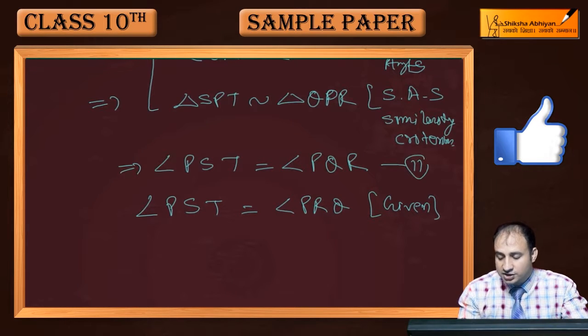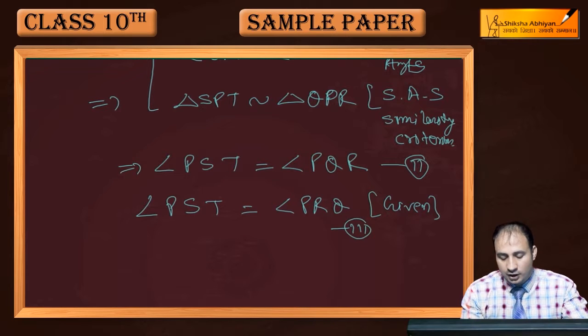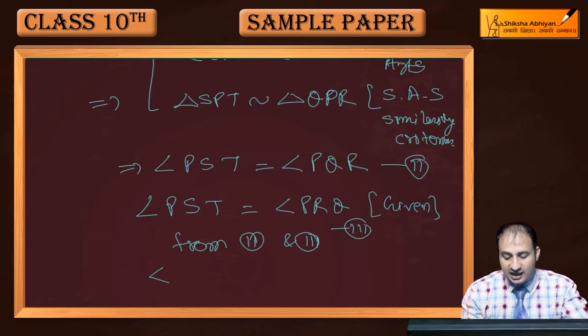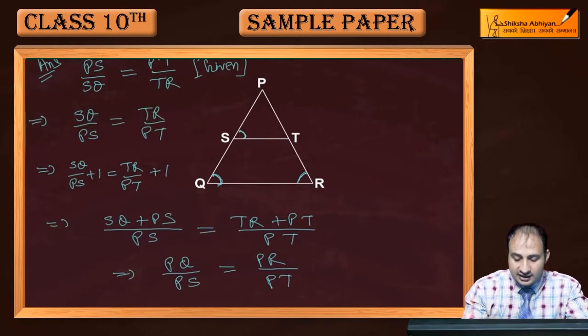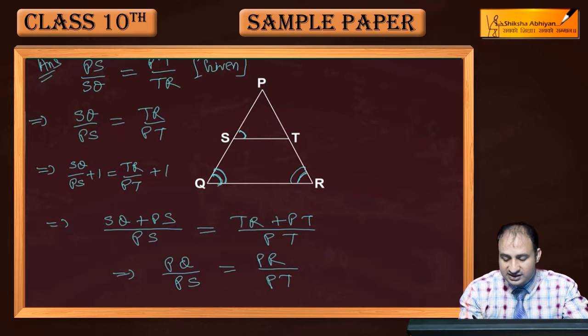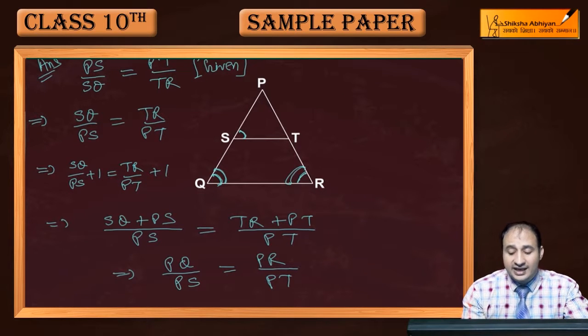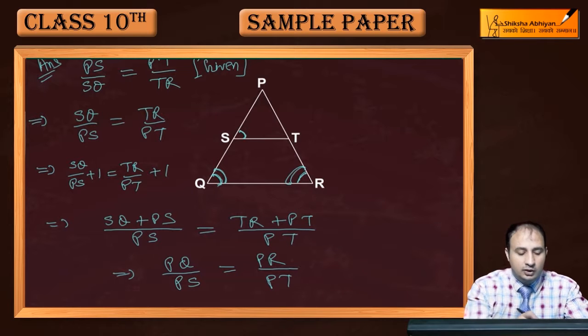Here we know that angle PQR is equal to angle PRQ. These two angles, this angle is equal to this angle. And when these two angles are equal then their opposite sides, that is PQ and PR, will also be equal. This implies that PQ is equal to PR.